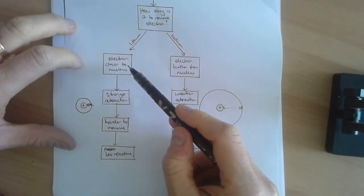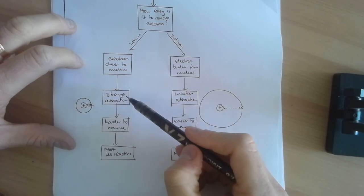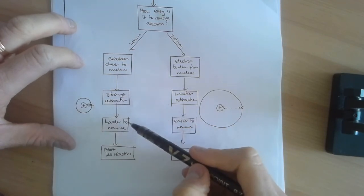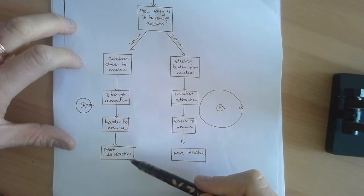Lithium, the electron is closer to the nucleus, therefore there is a stronger attraction. It's harder to remove, and therefore lithium is less reactive.